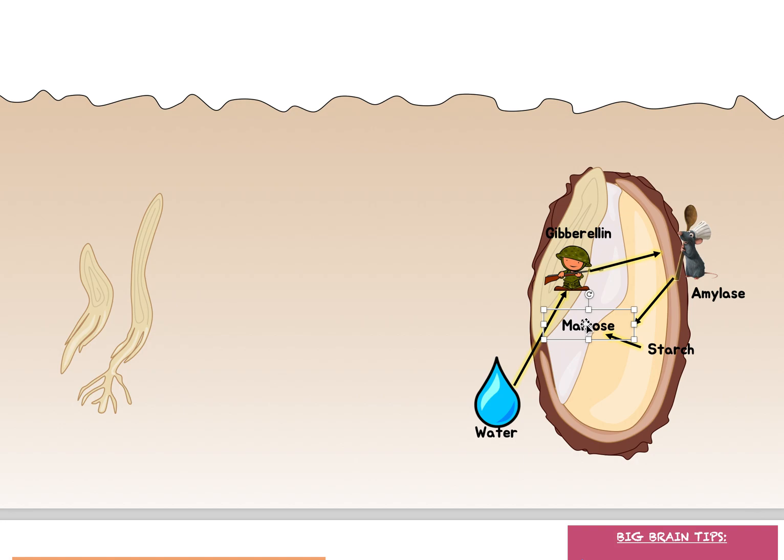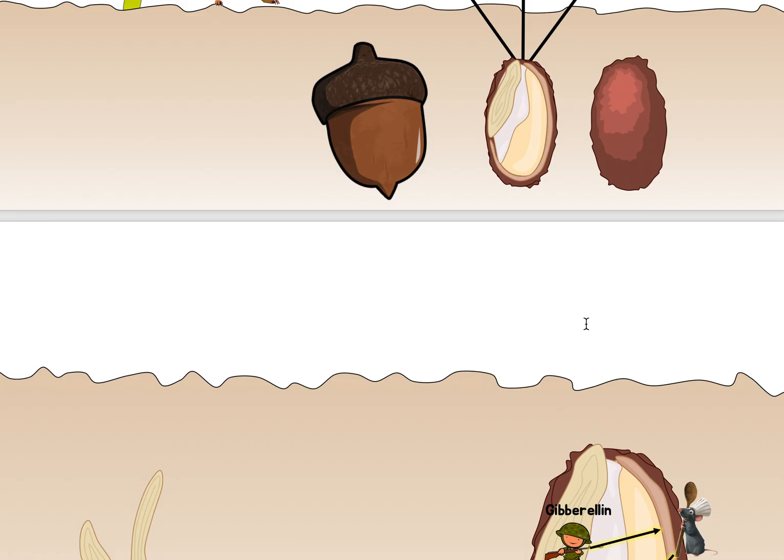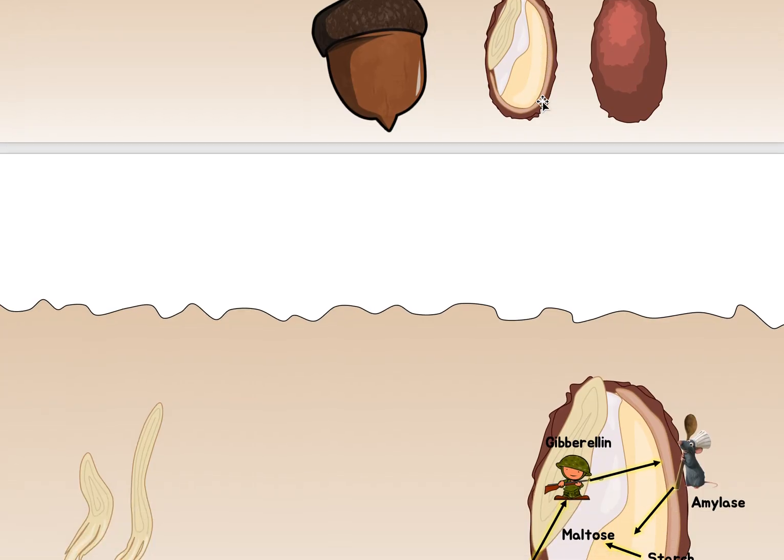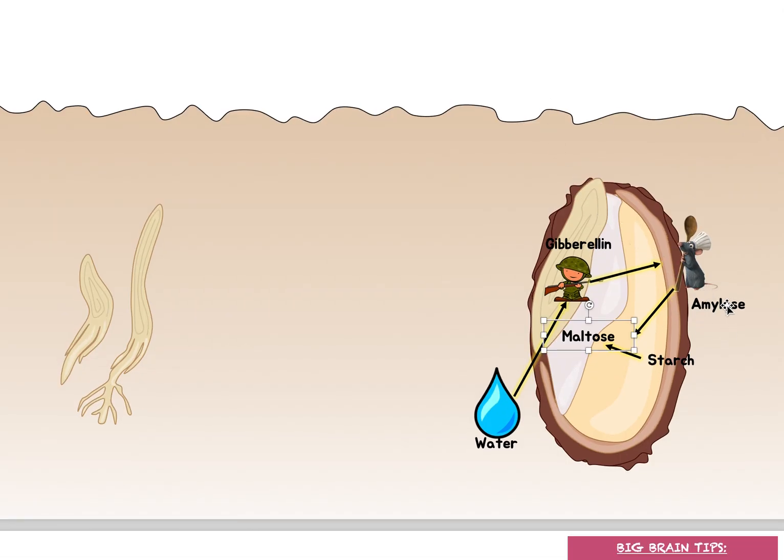First of all, remember going back to temperature. We know why we need water. Temperature is needed because this enzyme, amylase, can only function at the right temperature. So if it's too hot or too cold, it will not be able to do its job. And so this embryo will not be able to get its glucose or maltose to be able to grow.